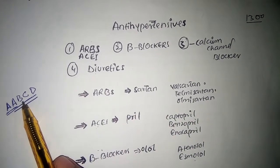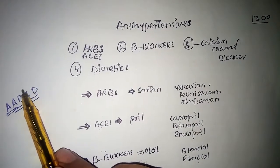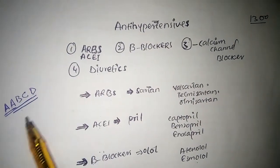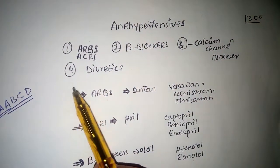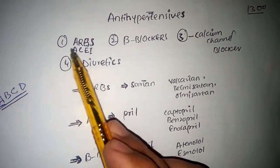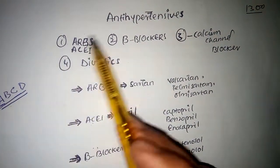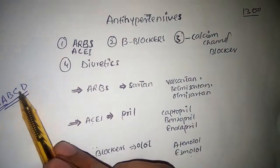ABCD is a mnemonic to remember antihypertensives. A stands for ARBs, another A for ACE inhibitors, B for beta blockers, C for calcium channel blockers, and D for diuretics.